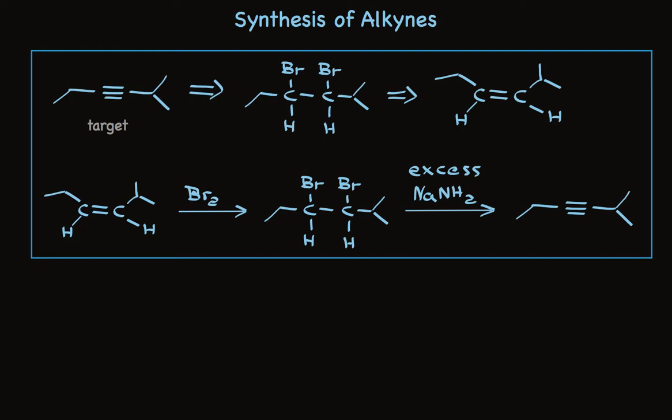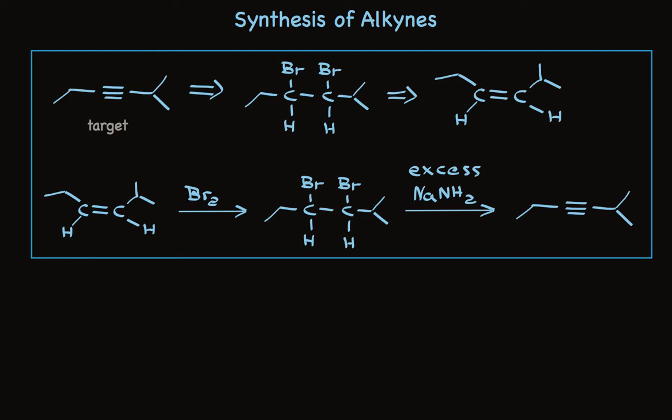We could make it from a terminal acetylene by alkylation. We know that we can attach primary alkyl groups to an acetylene carbon. There's a CH2 right here. On the other side, the carbon attached to the acetylene carbon is a secondary carbon. It only has one hydrogen attached to it, and it's a very poor prospect for an SN2 reaction.